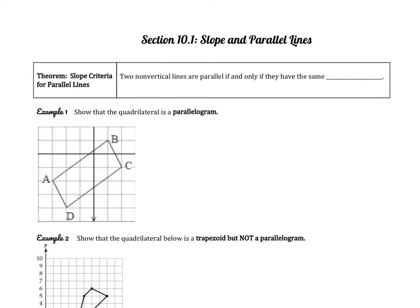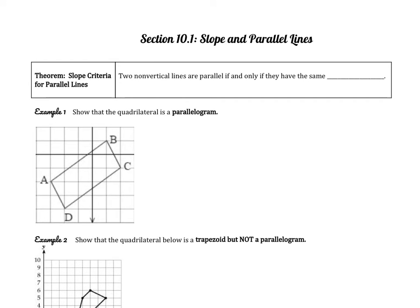Hi everyone, this is Mrs. G.A., and today we're going to talk about slope and its relation to parallel and perpendicular lines. Let's start with the slope criteria for parallel lines: two non-vertical lines are parallel if and only if they have the same slope.